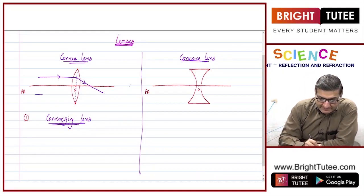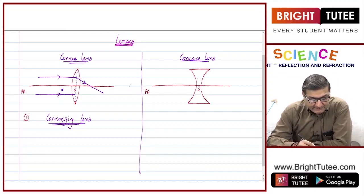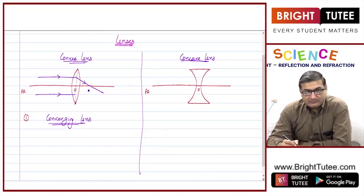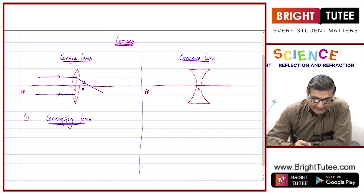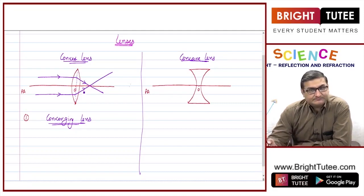Similarly, if a ray of light is coming from the downward direction and is parallel to the principal axis, after passing through this converging lens or convex lens, it will also bend towards the principal axis.